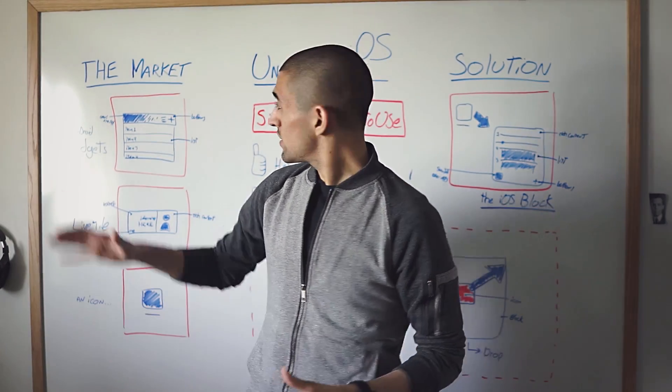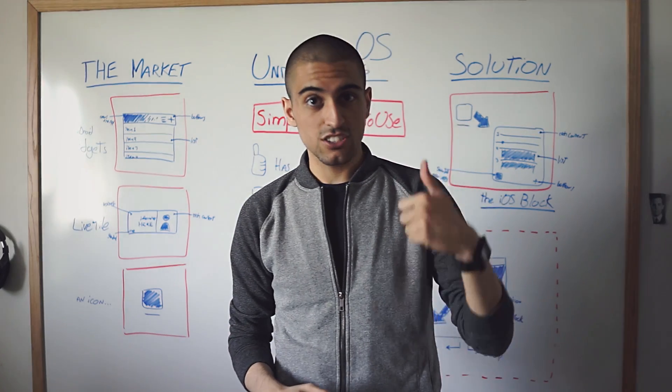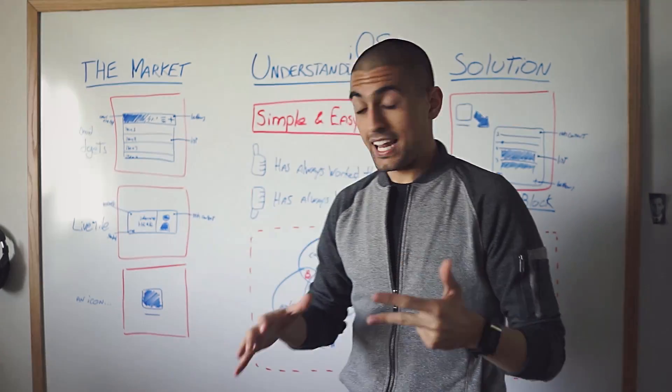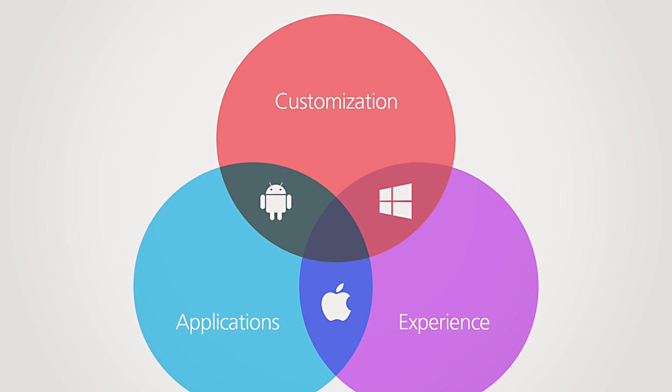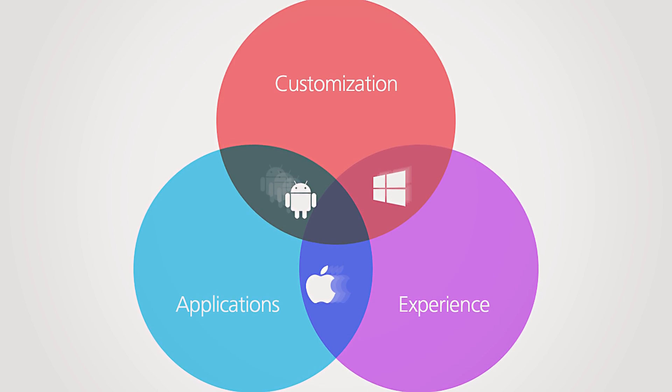In the research, we focus on the market with three main criteria: applications, customization, and experience. Again, I really recommend you go to the website and look at the Venn diagram, but right now I just want to focus on the Blocks system.